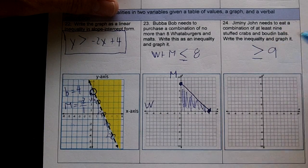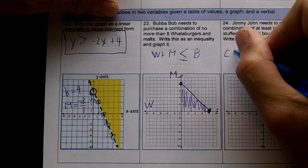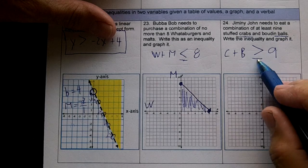Yeah, it's going to be at least nine, more than nine. Stuffed crabs and boudin balls. So we got crabs and boudin balls. So the crabs plus the boudin balls has to be more than or equal to nine.